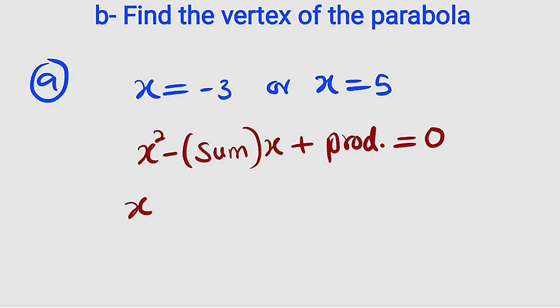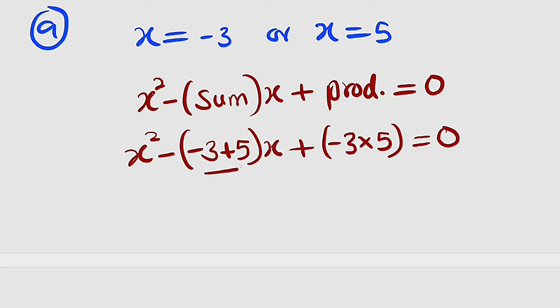So now let's substitute. We have x squared minus sum, meaning we should add them together. We have negative 3 plus 5, then you multiply by x, plus their product, negative 3 multiplied by 5. The whole of this equal to zero. Let's simplify. Negative 3 plus 5 is positive 2. Positive 2 times x is 2x. Multiply by negative is negative 2x. So we have x squared minus 2x. Then we have negative 3 times 5 which is negative 15. So we have plus negative 15. The whole of this equal to zero. This is the quadratic equation that has those two roots, negative 3 and 5.